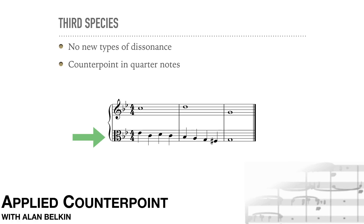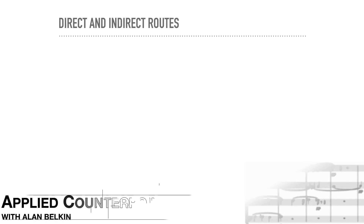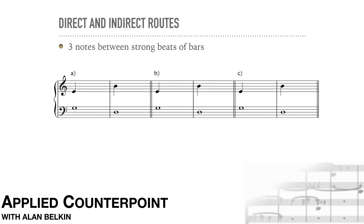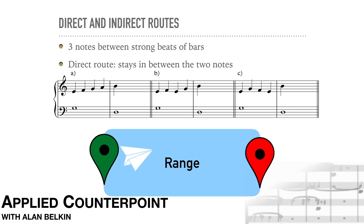Since there are now going to be three quarter notes between the chord tones on the first beat of each bar, there are many possible routes between them. We can divide these routes into direct routes and indirect ones. A direct route simply means filling in the interval between the downbeats without going outside of its range. All these examples start and end with the same notes, E and B, and cover different paths between the first beat chord tones — these are just a few possibilities out of many.